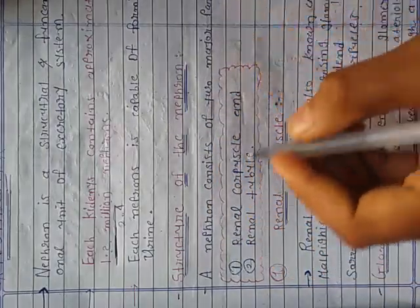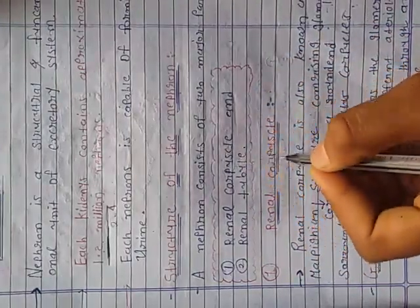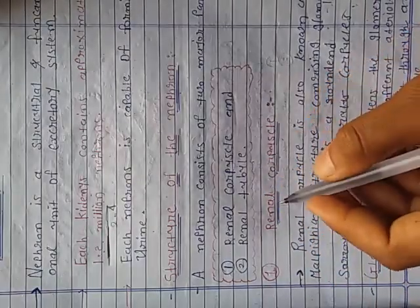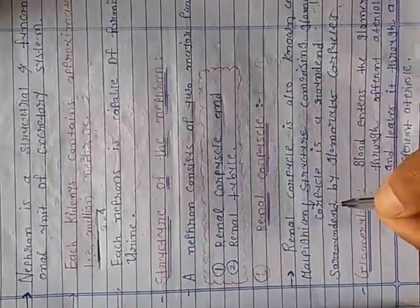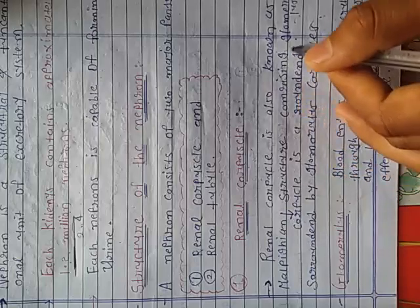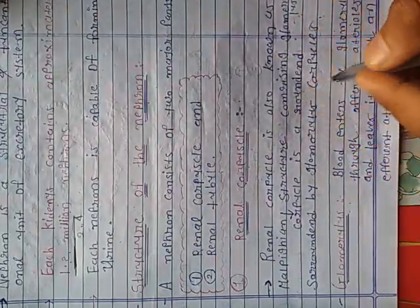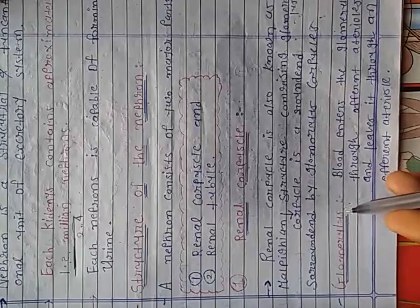...of two major parts: renal corpuscles and renal tubules. The renal corpuscle is also known as the Malpighian corpuscle, a rounded structure comprising the glomerulus surrounded by the glomerular capsule.